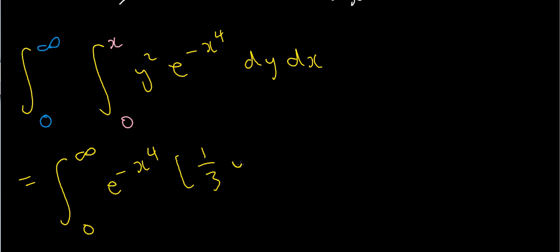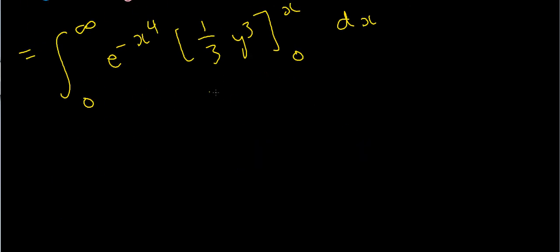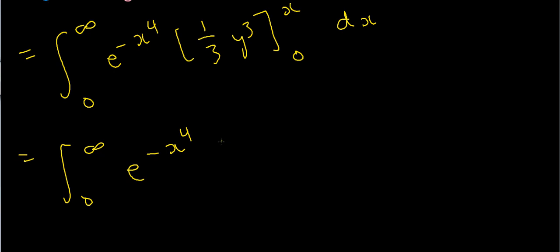So that's one third y cubed evaluated from 0 to x, with dx on the outside. Plugging in the limits, I get the integral from 0 to infinity of e to the minus x to the 4 times — substituting in x gives one third x cubed, and substituting in 0 gives zero. So that's one third x cubed dx. This is looking a lot simpler.